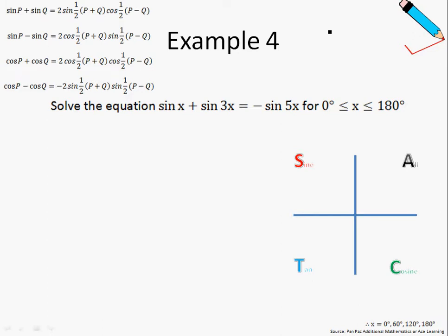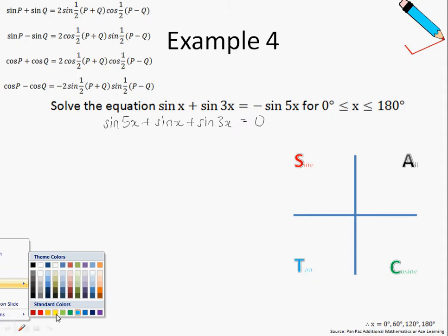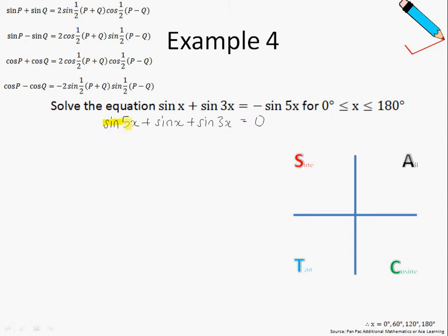Okay, so for this seemingly difficult-looking equation, what we will do is shift negative sine 5x over to the left-hand side of the equation. So I'll end up with sine 5x plus sine x plus sine of 3x equals 0. Then we will apply the factor formula on the yellow highlighted portion.